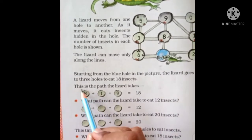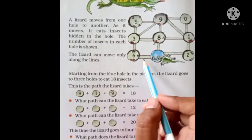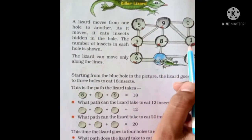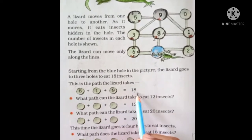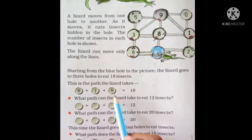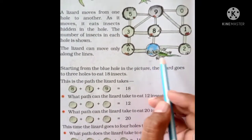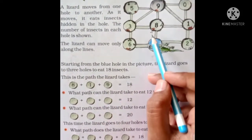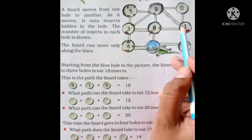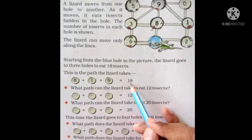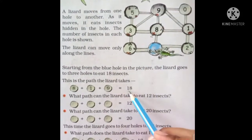This is the path the lizard takes. Each: plus one, plus nine is equal to 18. That means it passes 3 holes and eats 18 insects. The path will go through 8 — uske baad 1 ke paas jaegi, 1 ke baad 9 ke paas jaegi — yani 1, 2, and 3 hall mein jake wo total 18 insects kha jaegi. 8 plus 1 is 9 and 9 plus 9 is 18.